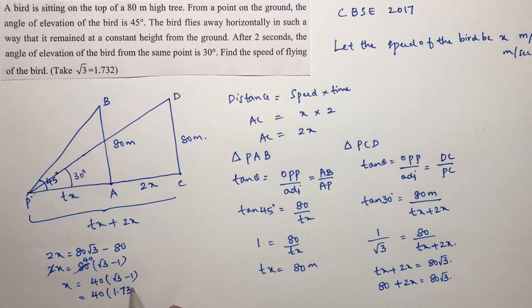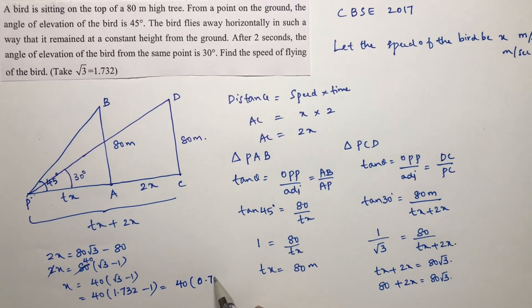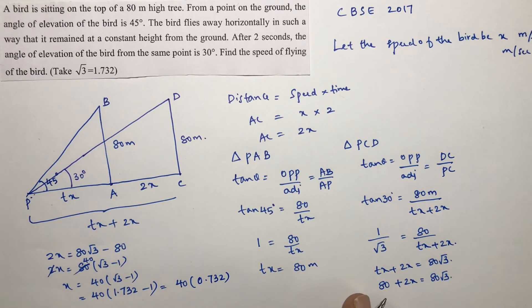40 into root 3 value they gave in the problem which is 1.732 minus 1. So 40 times 1.732 minus 1 is 0.732. 40 into 0.732.